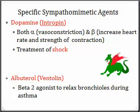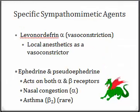Albuterol, trade name Ventolin, almost exclusively works on beta 2 receptors in our lungs, causing smooth muscle to relax and dilate so air can get in. Levonordefrin works almost exclusively on alpha receptors, causing vasoconstriction. Some local anesthetics, such as Carbocaine, use levonordefrin versus epinephrine as a vasoconstrictor in the cartridge.